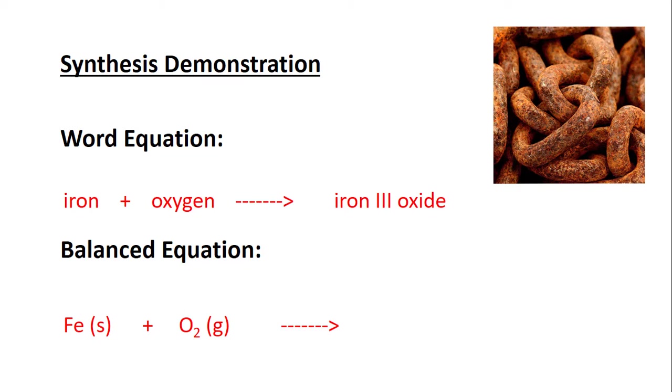The s after the iron stands for solid, and the g after the oxygen stands for gas. When we go to predict the product of this chemical reaction, it's important to remember your ion charges. The iron(III) means that we have Fe with a +3 charge, and oxide is -2. You want to stop and think about how do we make a neutral compound out of those two ions.